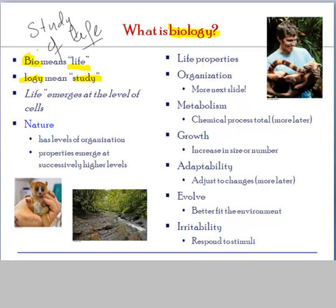Let's look at certain properties of life. The first property, organization, we will explore on the next slide. Metabolism is the sum total of all reactions carried out by a living organism. It includes reactions that help you digest food, energy provided for movement — walking, swimming, or hiking — how plants store energy, how they grow in size, and how they respond to certain stimuli. That's all going to involve chemical reactions we will study within metabolism.